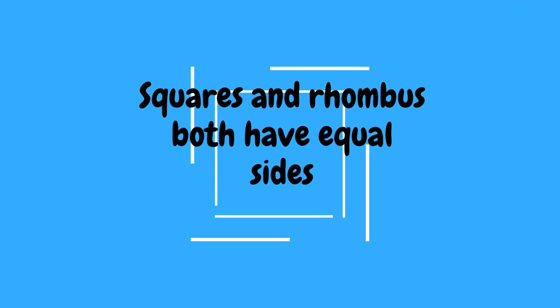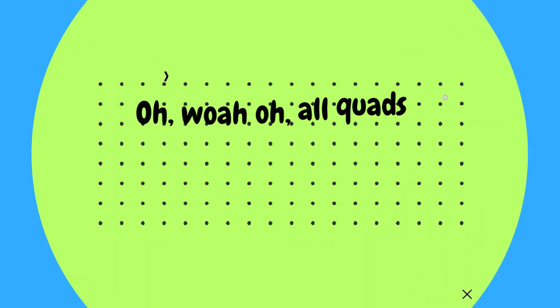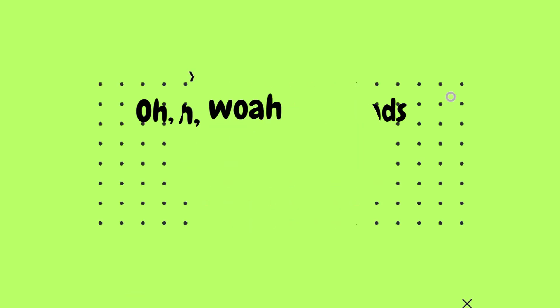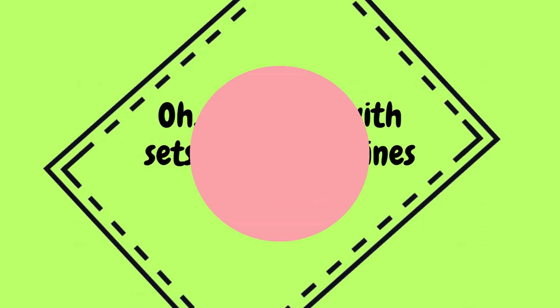Squares and rhombus both have equal sides. All rectangles have angles that are right. Oh, oh, oh, all quads have four sides. Oh, oh, oh, a set of parallel lines.